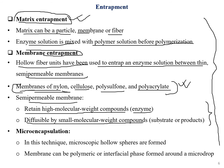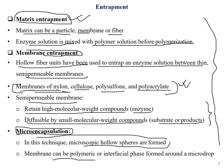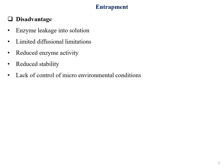Micro-encapsulation is another important entrapment process. In this technique, microscopic hollow spheres are formed. The membranes can be polymeric, and a polymeric or interfacial membrane is formed around the micro-droplet. This results in a very small surface area, as implied by 'micro' encapsulation.